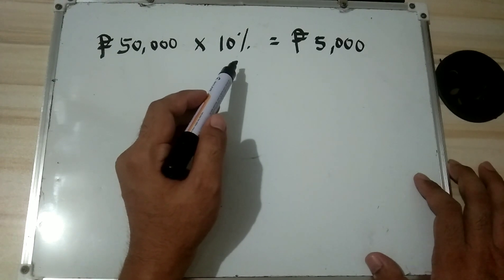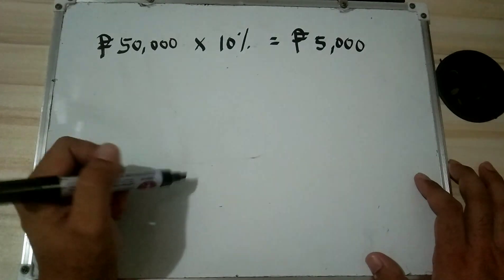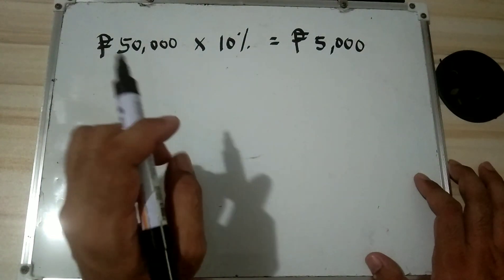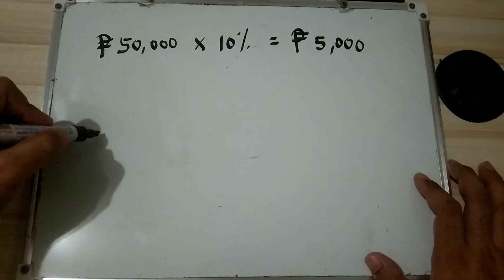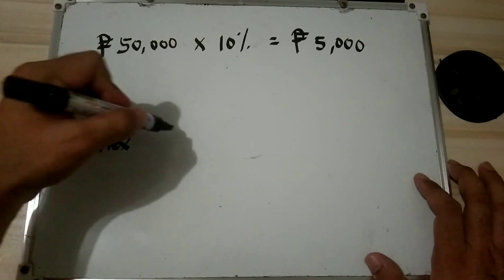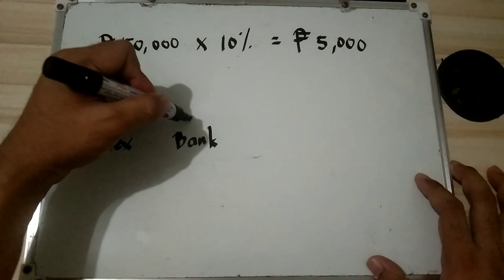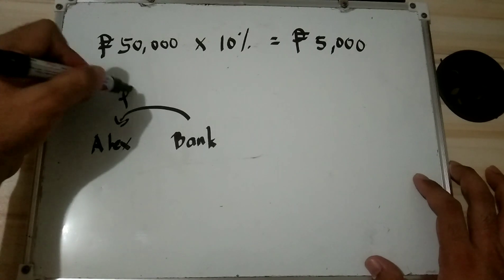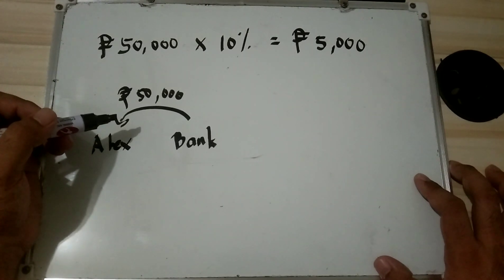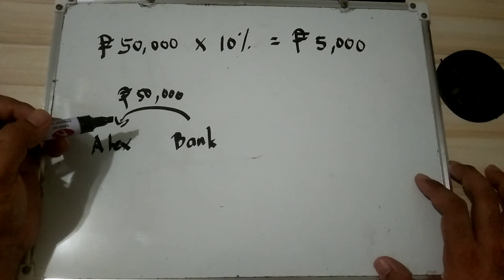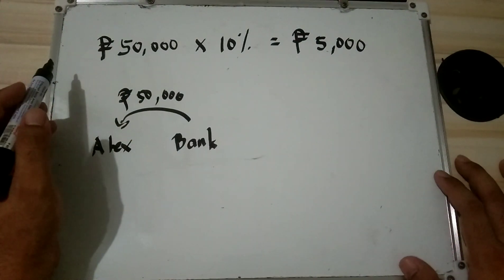People often say 10% interest without saying 'rate.' Alex will have to pay back the original 50,000 pesos after one year. So Alex borrows 50,000 pesos but has to pay back 5,000 pesos interest plus the principal of 50,000 pesos.